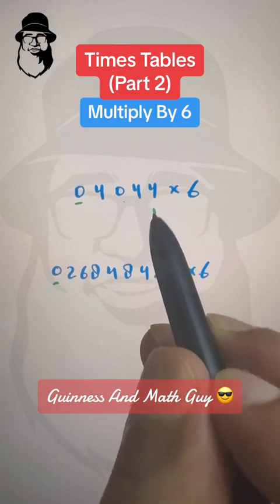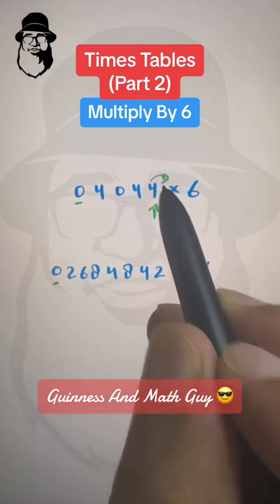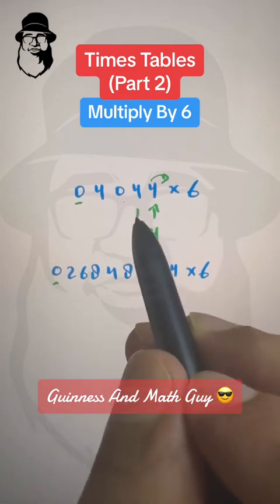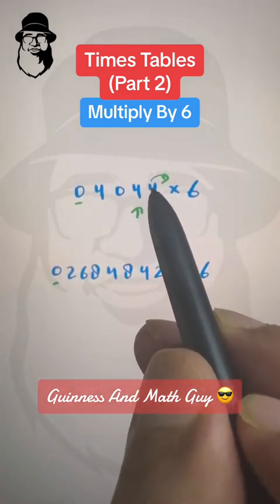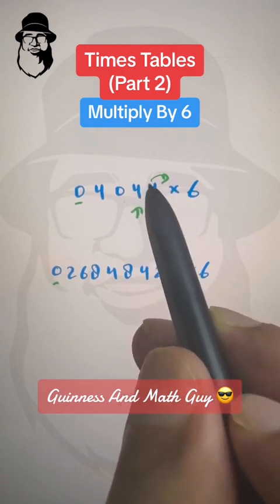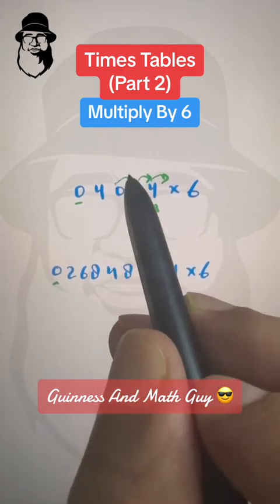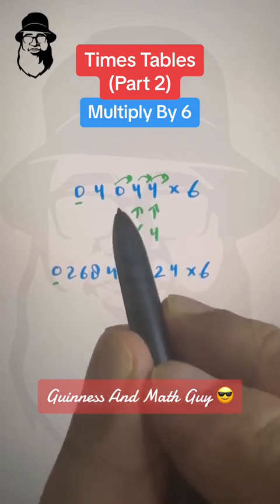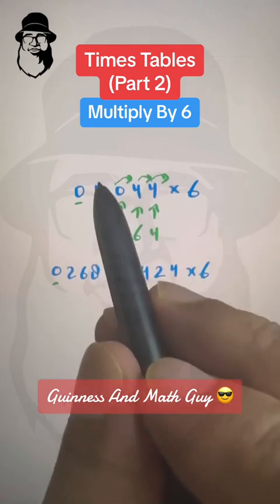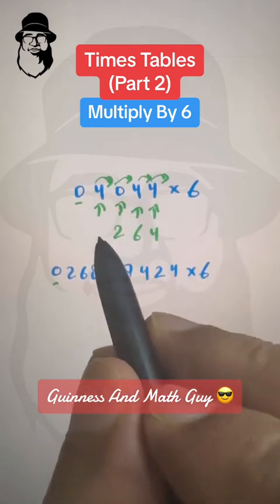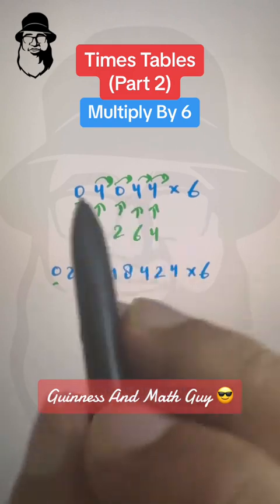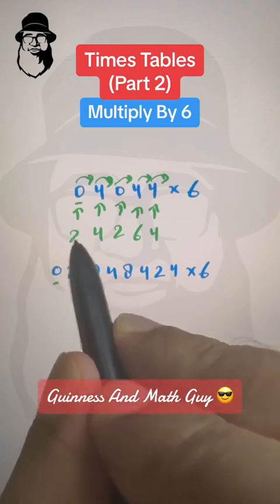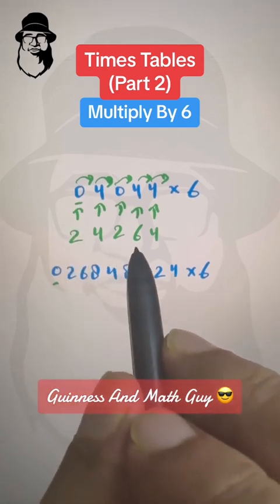Here we have 4: 4 plus half of neighbor 0 is 0, so 4 plus 0 is 4. Then we are at the next 4: 4 plus half of 4 is 2, so 4 plus 2 is 6. We write 6. Then half of 4 is 2, so 0 plus 2 is 2. Now at the next digit: 4 plus half of 0 is 0, so 4 plus 0 is 4. Then 0 plus half of 4 is 2, so 0 plus 2 is 2. The answer is 24,264.